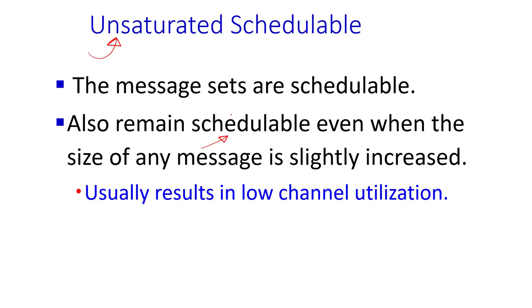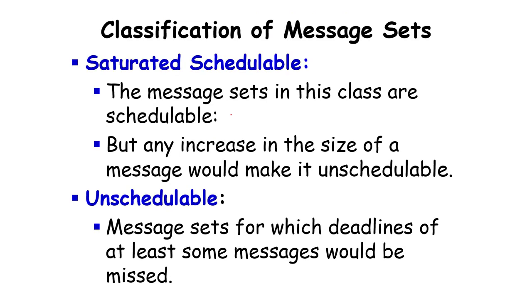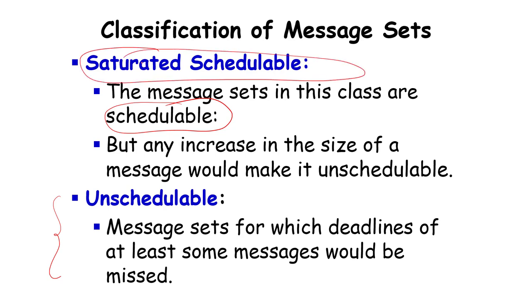Saturated schedulable sets are at the boundary: a slight increase in message size transitions them from schedulable to unschedulable. Think of three classes: unschedulable, the boundary saturated class, and unsaturated schedulable. The utilization metrics for comparing protocol performance are the Absolute Breakdown Utilization (ABU) and the Guaranteed Probability (GP) at a given utilization U.